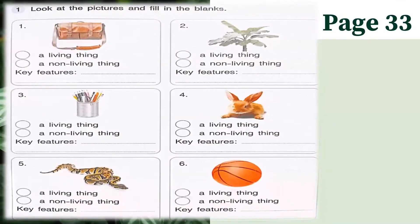For the second part of your activity, you can find this on page 33. The direction says: look at the pictures and fill in the blanks. Before you fill in the blanks, you have to take your answer first. You identify the picture — whether it is a living thing or a non-living thing. If it's a living thing you take the first circle, if it's a non-living thing you take the second circle, and then you write the key feature: do they move, do they breathe, do they react to stimuli?